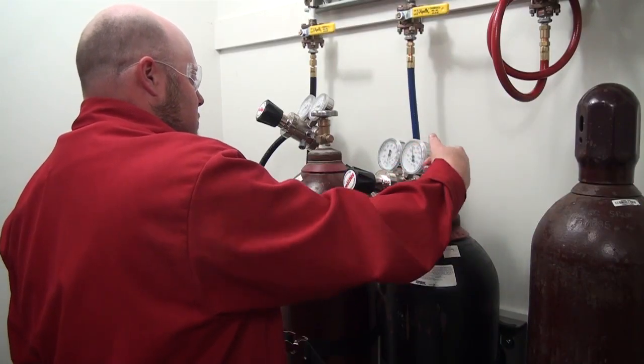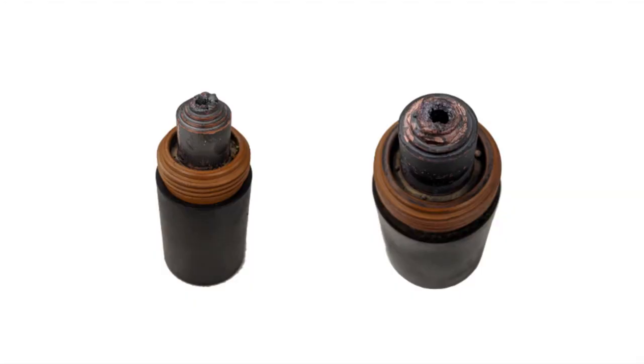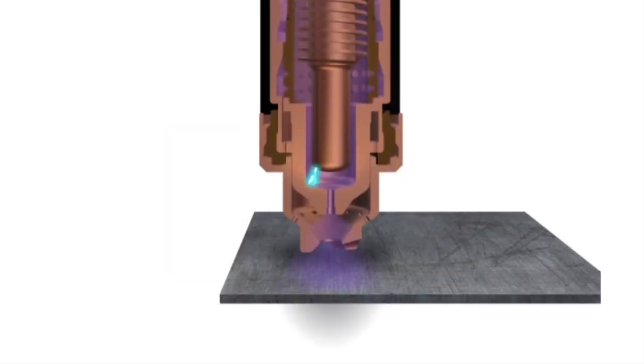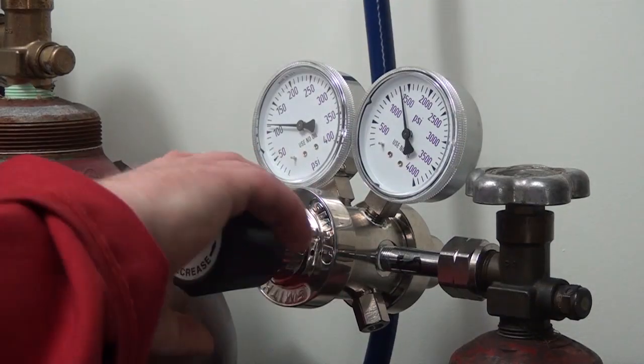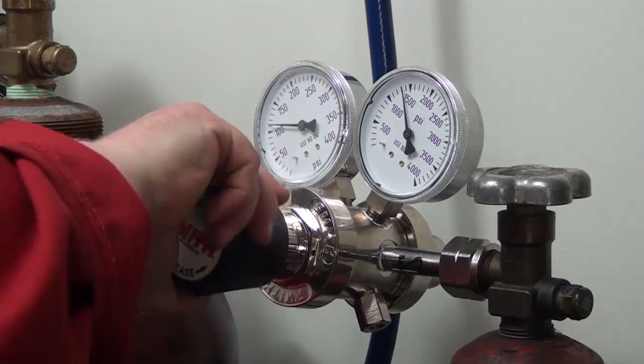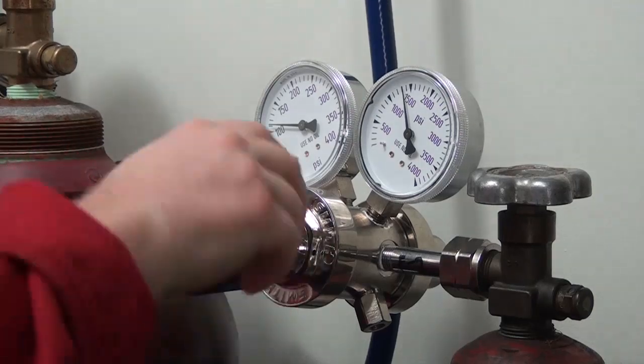Another factor that impacts nozzle life is proper gas flow. Low flow rates can lead to catastrophic, almost immediate nozzle destruction by causing the pilot arc to attach to the inside of the nozzle orifice. Check to make sure that you have proper gas flow if you feel that you are experiencing premature consumable life.